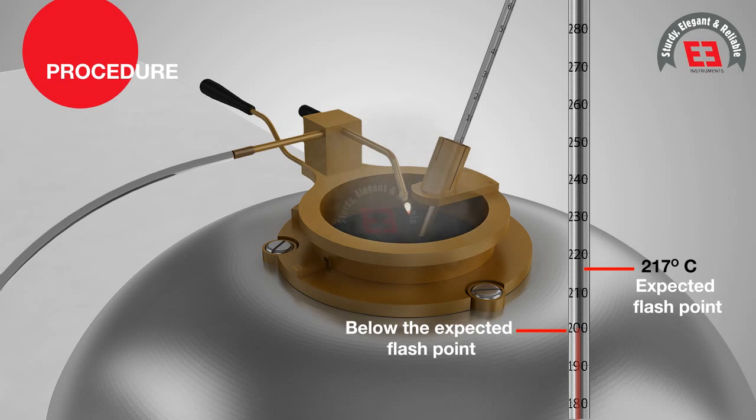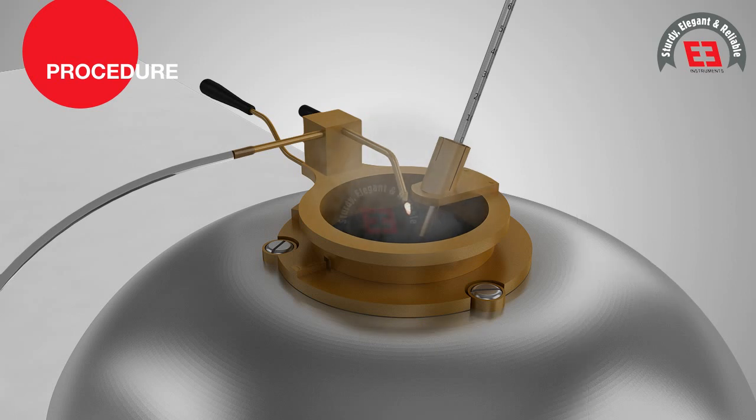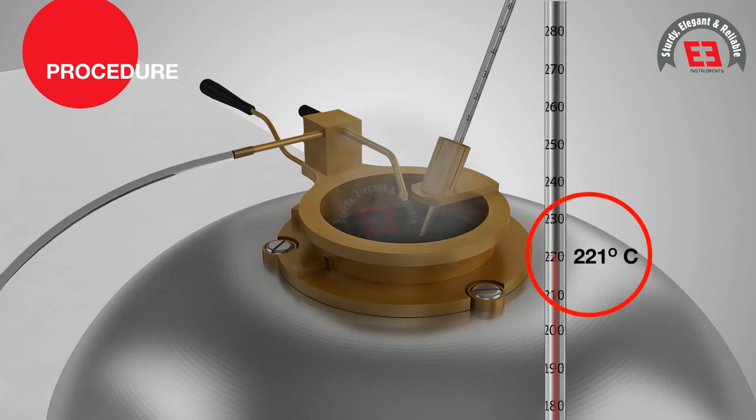the test flame is applied on the surface of the sample with the help of burning matchstick at every rise of 1 to 3 degrees Celsius. When the flash occurs for the first time, the temperature at that instance is recorded as the flash point under open cup test.